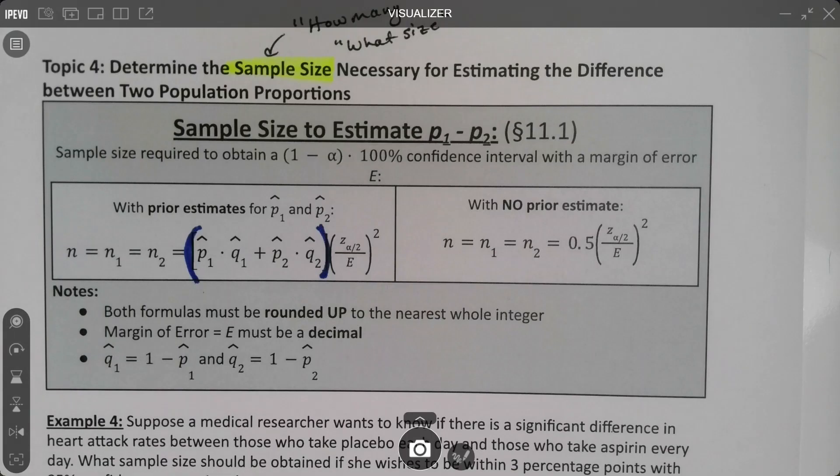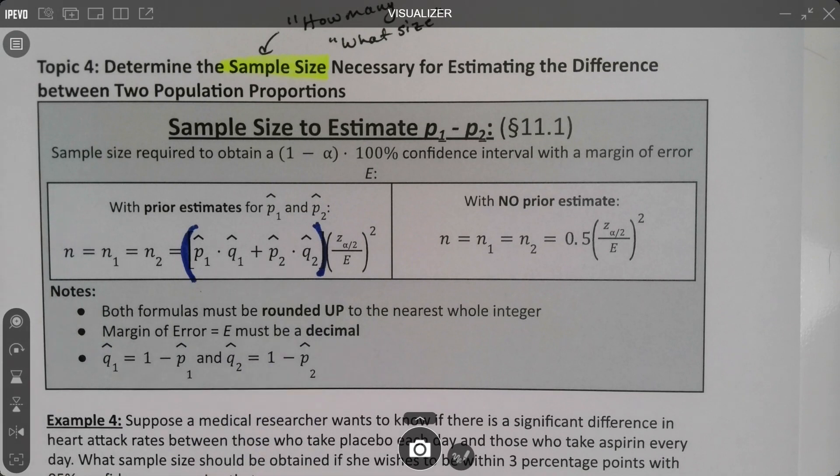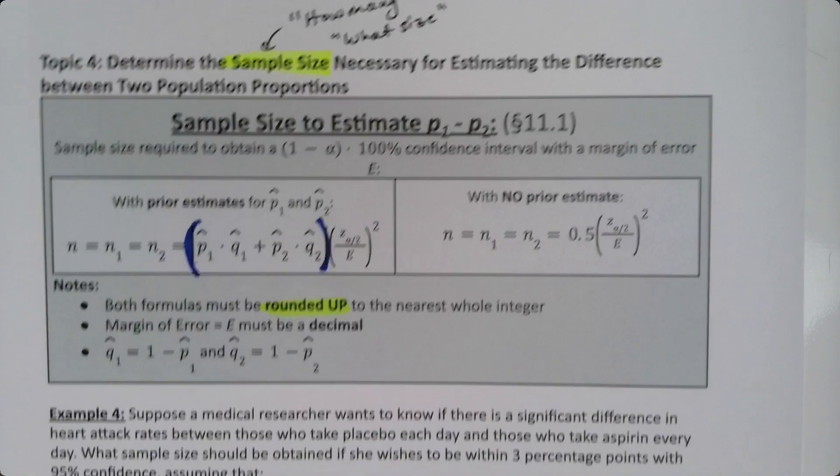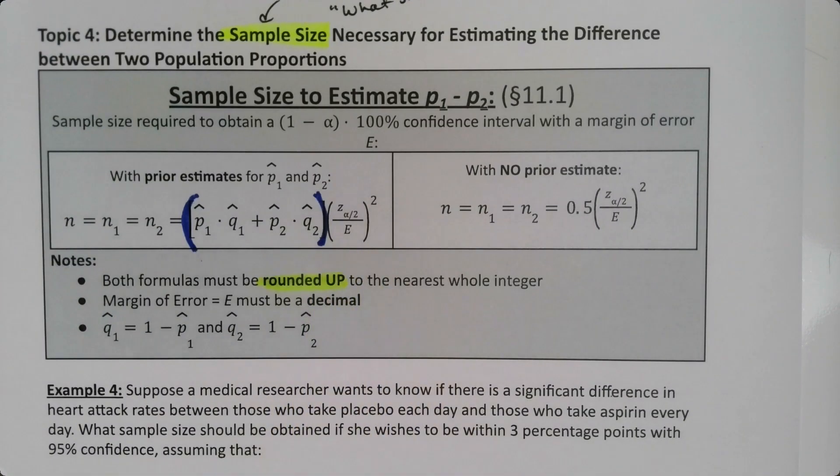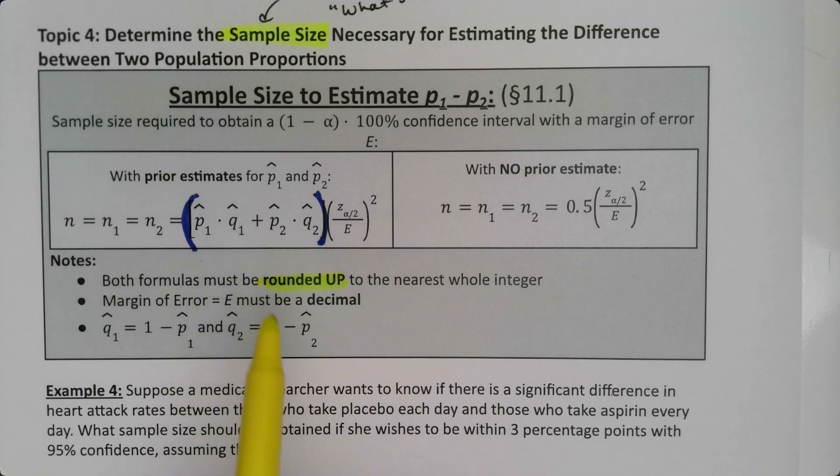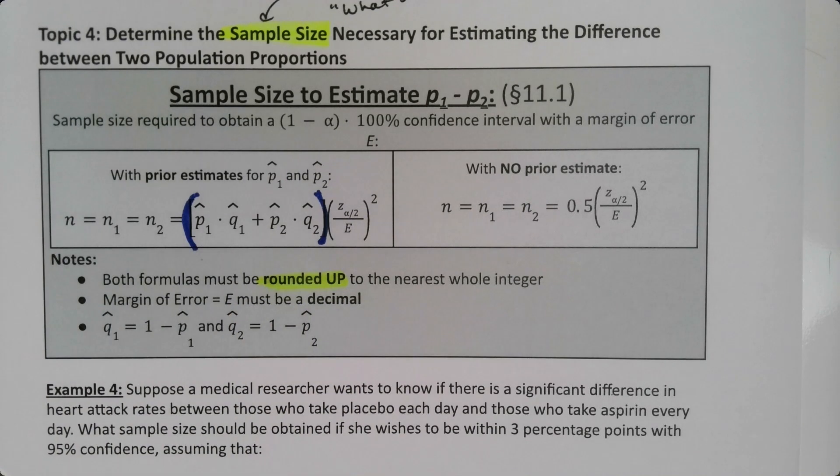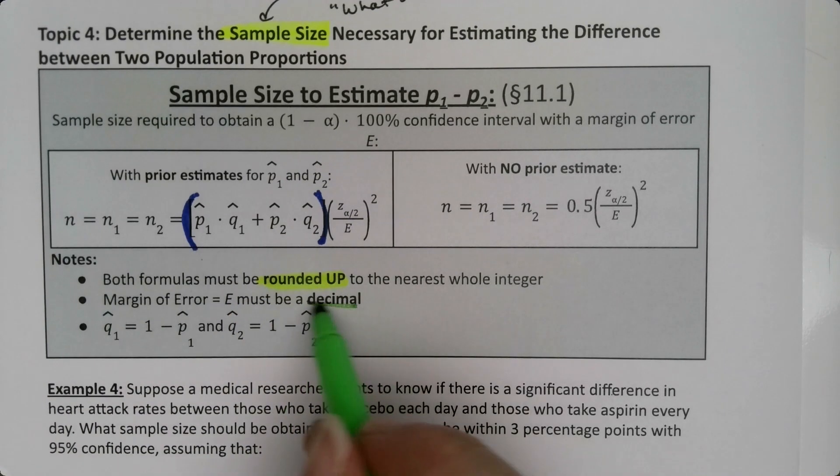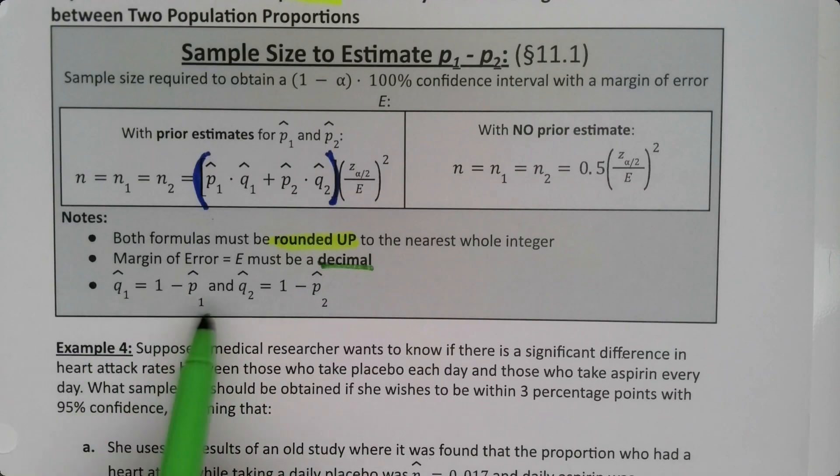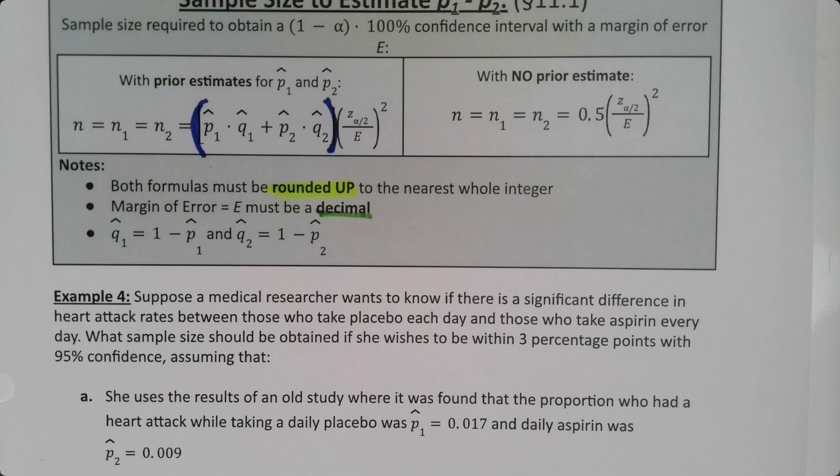Some other things to note. We have to round up just like we did in chapter 9. Because if we go down, if we do regular rounding, we either won't have the confidence or the error that we wanted. So we must round up on these cases. This is the only time in the whole course that we round up. The rest of the course we just do regular rounding. Margin of error is a decimal because it's very commonly given to you as a percent and you'll have to change it to a decimal. And then of course we've seen these before, but Q hat is the complement of P hat.